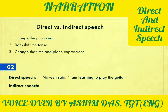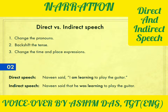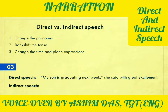Let's move on to sentence number two: Naveen said, 'I am learning to play the guitar.' The answer is: Naveen said that he was learning to play the guitar. 'I' changes to 'he.' 'Am learning,' which is present continuous tense, changes to 'was learning,' which is past continuous tense.